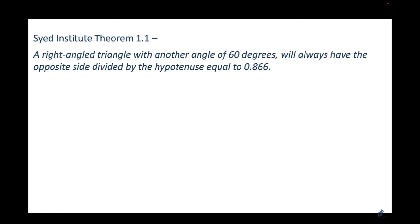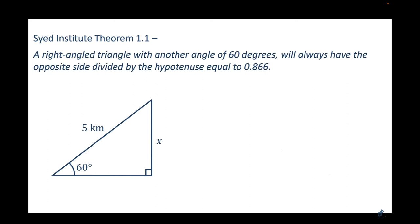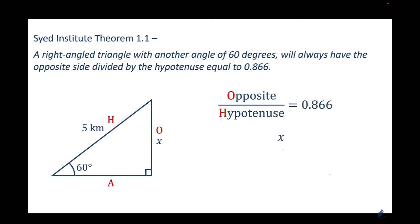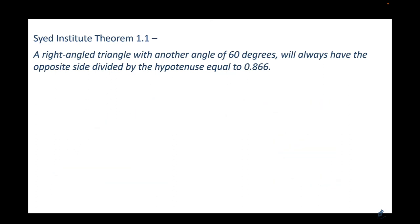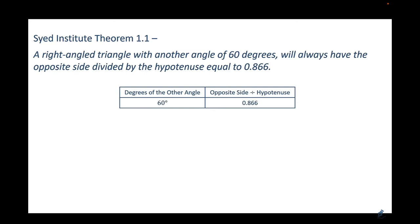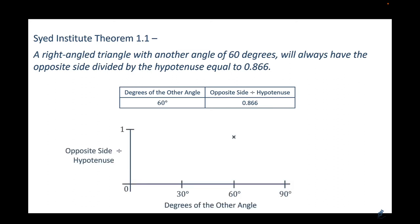This discovery can be made into a theorem to find missing sides. For a right triangle with a 60-degree angle and hypotenuse of 5 km but unknown opposite side x: x/5 = 0.866, so x = 0.866 × 5 = 4.33 kilometers. Keeping a record of these results in a table and plotting them on a graph helps notice patterns. So far we've used 60-degree triangles, but those other angles won't always be 60.